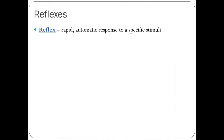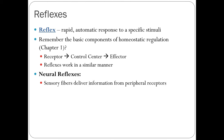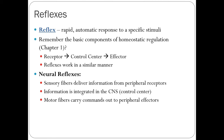A reflex is a rapid, automatic response to a specific stimulus. Reflexes work similarly to homeostatic regulation from chapter 1 — a receptor picks up information, a control center processes it, and an effector responds. In a neural reflex, sensory fibers deliver information from peripheral sensory receptors, the information is integrated in the CNS as the control center, and motor fibers carry commands out to peripheral effectors such as skeletal muscles to counteract the initial stimulus.